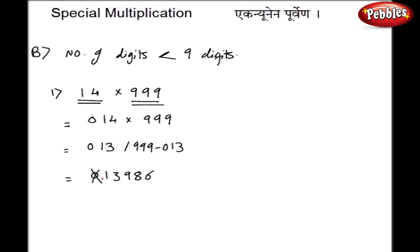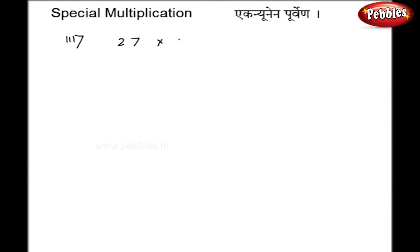This leading 0 can be omitted. Let us take one more example: 283 multiplied by 999. I directly write the answer by subtracting 1 on the left hand side, giving 282, and 999 minus 282 gives 717. So the answer is 282717. One more example: 27 multiplied by 99999, that is five 9s.